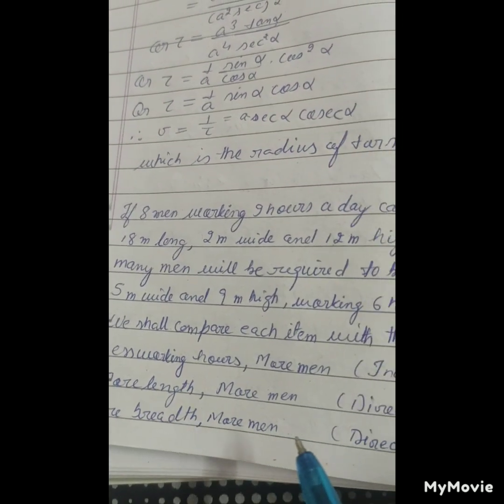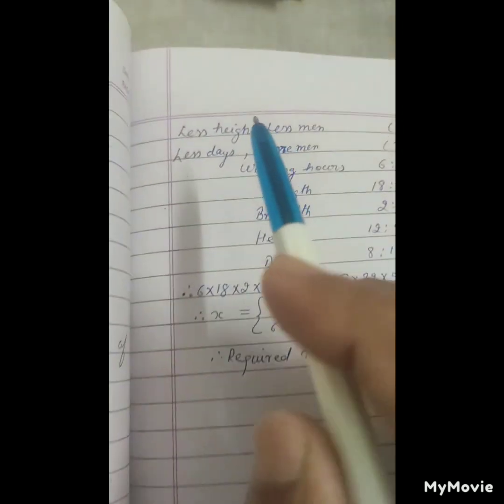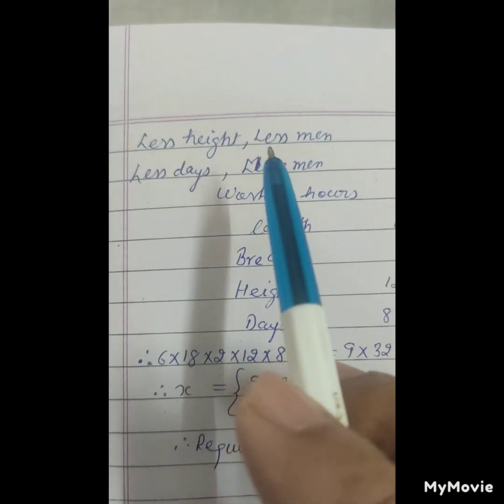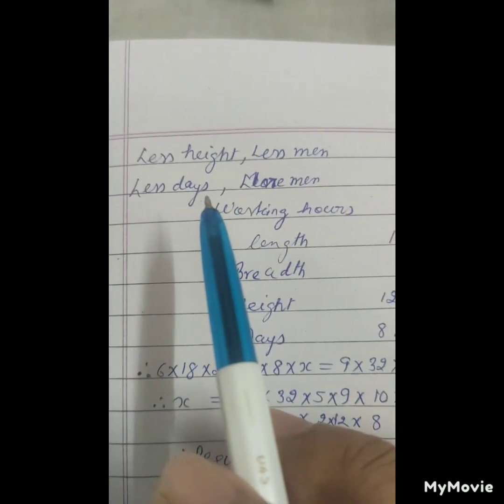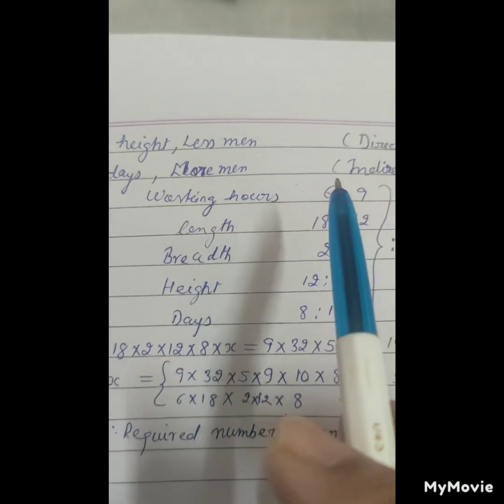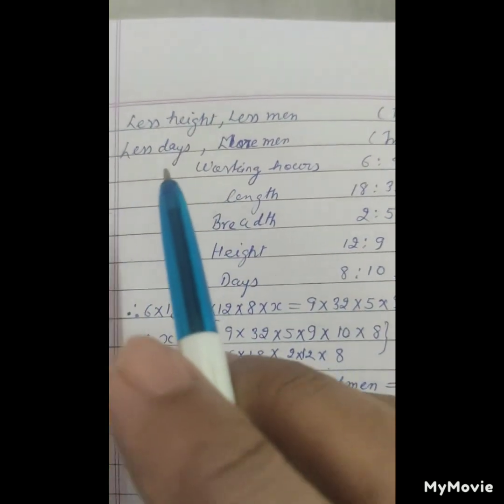More breadth means more men - direct. Less height means less men - direct. Less days means more men - indirect.